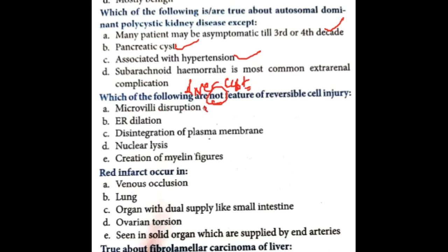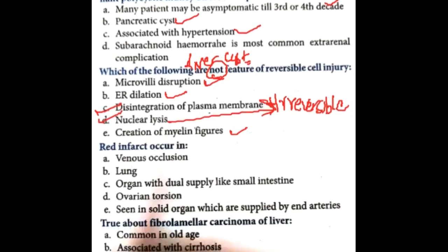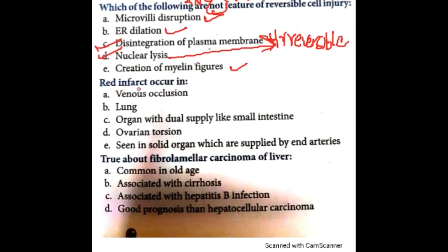Which of the following is not a feature of reversible cell injury? Microvilli disruption is a feature of reversible cell injury. Endoplasmic reticulum dilatation — true, reversible. Disintegration of plasma membrane goes to irreversible cell injury. Nuclear lysis is also irreversible. Myelin figures are seen in reversible cell injury but their number increases in irreversible. So in irreversible cell injury you see disintegration of plasma membrane and nuclear lysis.